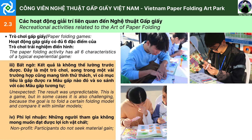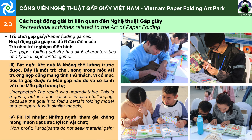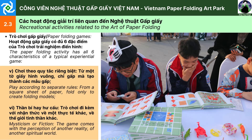Thứ ba, bất ngờ - kết quả là không thể đoán trước được. Đây là một trò chơi, song trong một vài trường hợp cũng mang tính thử thách vì có mục tiêu là gấp ra được mẫu gấp nào đó và so sánh với các mẫu gấp tương tự. Thứ tư, phi lợi nhuận - những người tham gia không mong muốn đạt được lợi ích về vật chất. Thứ năm, chơi theo quy tắc riêng biệt - từ một tờ giấy hình vuông, chỉ gấp mà tạo thành các mẫu gấp. Thứ sáu, thần bí hay hư cấu - trò chơi đi kèm với nhận thức về một thực tế khác, về một thế giới tinh thần khác.